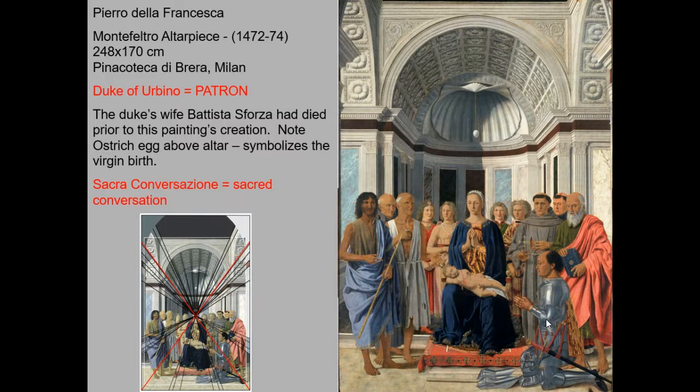Another sacred conversation painting to recognize includes a diagram clearly showing the application of perfect one-point perspective, with Mary's face as the vanishing point that all orthogonal lines lead toward. You can also clearly see the inclusion of the patron — the person who paid for the commission — the Duke of Urbino, shown kneeling to the right in his armor.